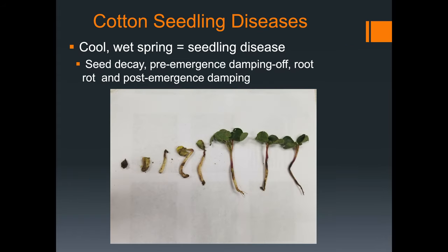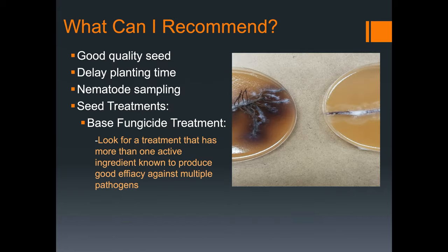It is very important to remember that with cool wet planting seasons come seedling diseases. What I can recommend is delaying planting time at least until the soil temperature is at least 65 degrees for three consecutive days at your desired planting depth. Plant resistant varieties, and always utilize a seed treatment.